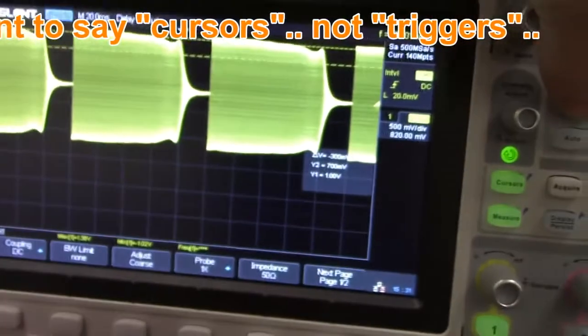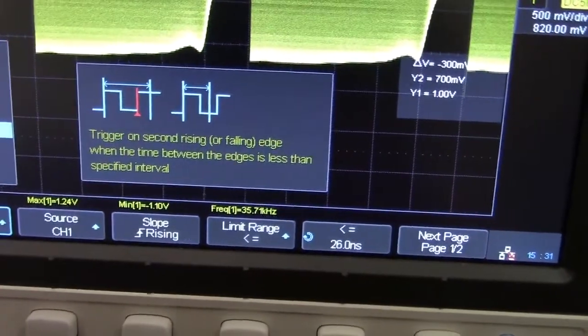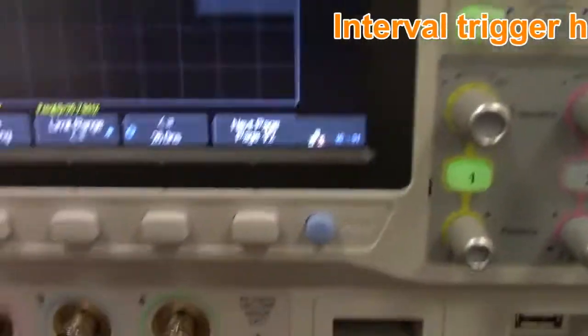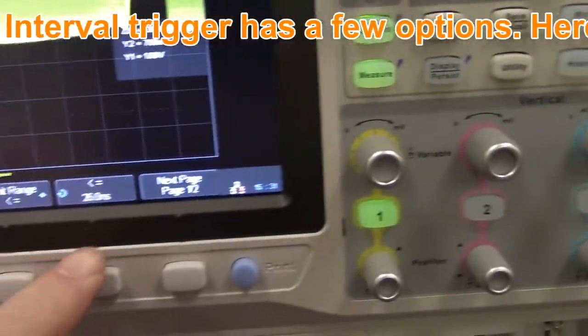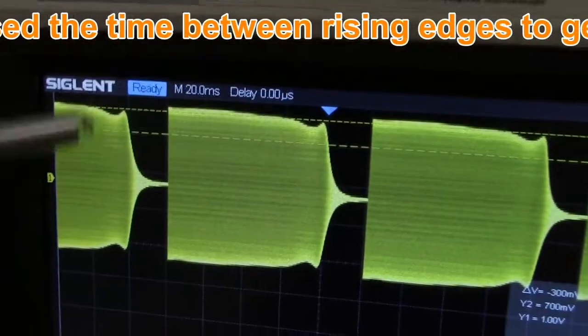In this particular case, triggering on these can be a little bit tricky. So what I had done was I used the interval trigger. The interval trigger, if we just press, will give us a little bit of help information. Basically, we're just looking for a time delay. And so I just set the time delay range to about 26 nanoseconds and I get a nice stable trigger.